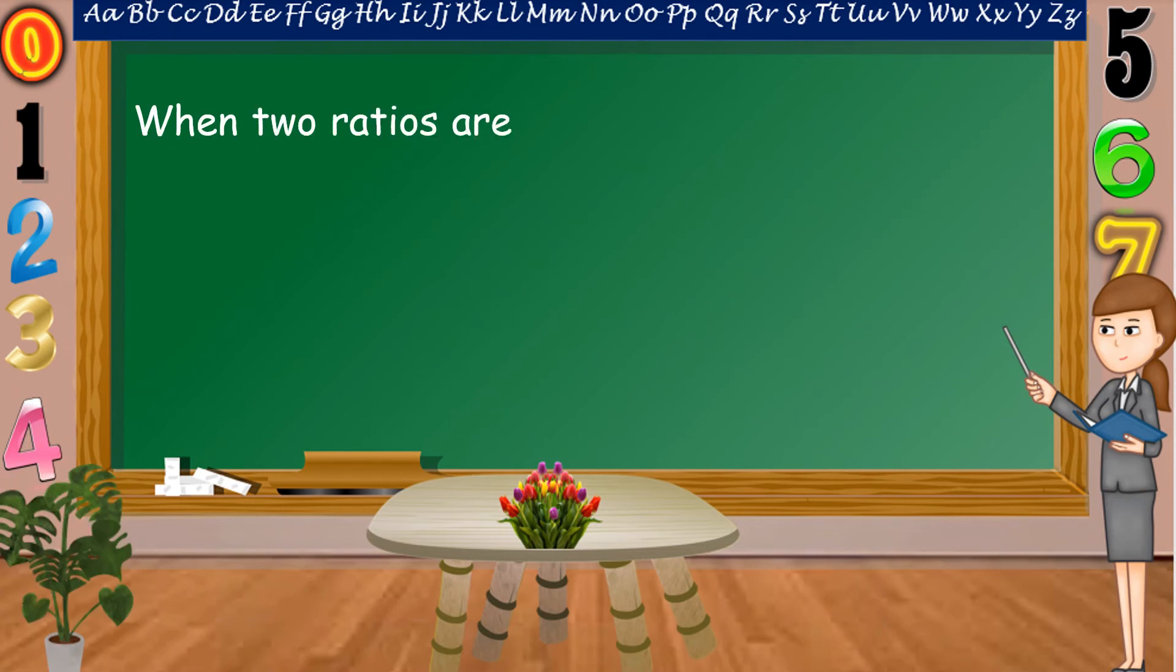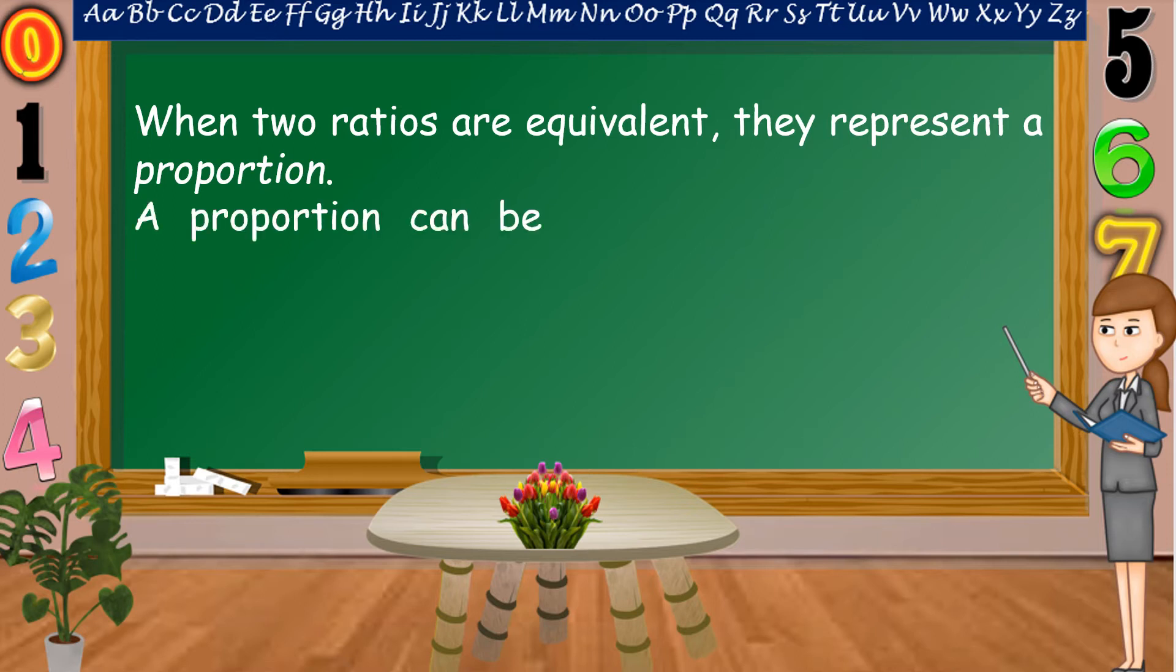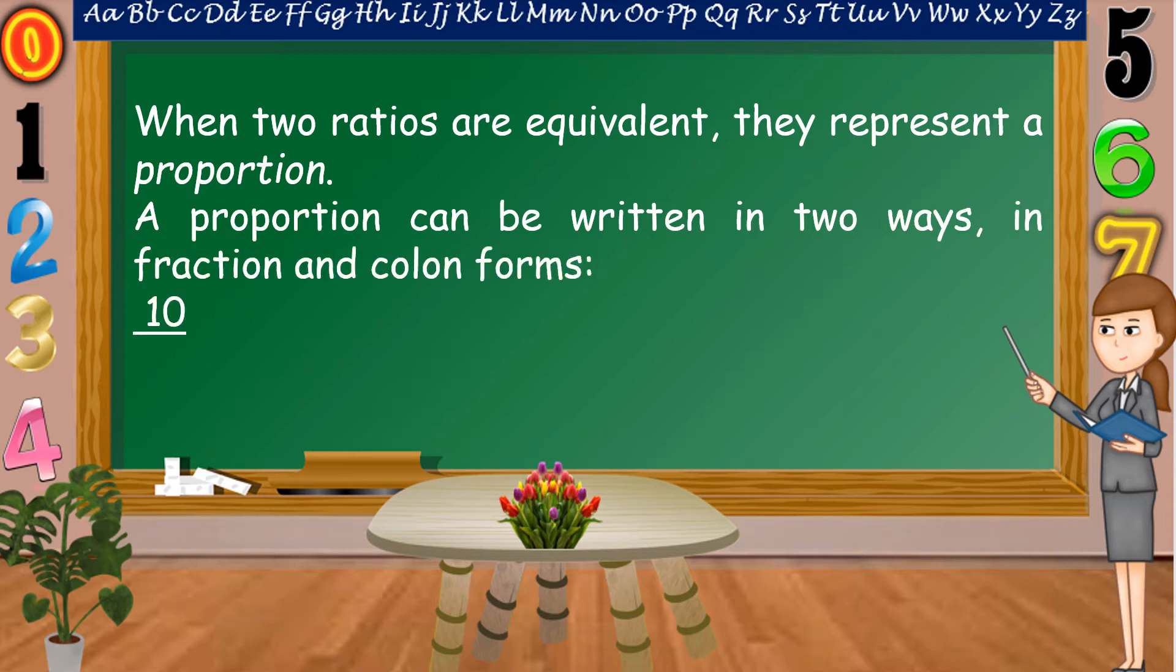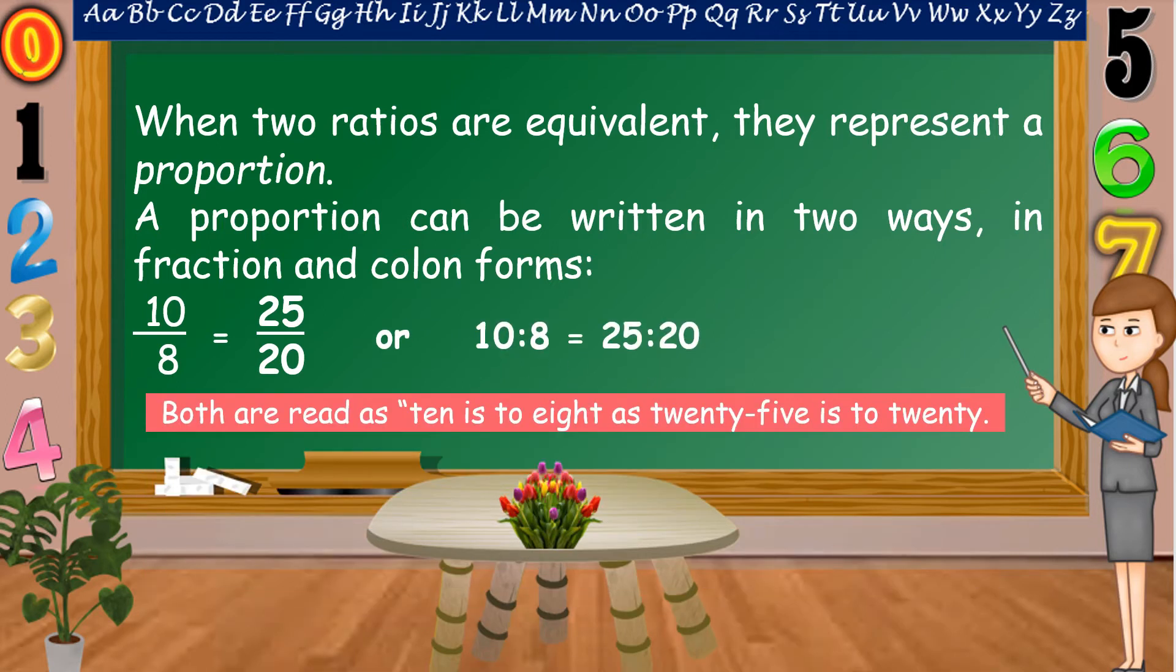When two ratios are equivalent, they represent a proportion. A proportion can be written in two ways, in fraction and colon forms. Both are read as 10 is to 8, as 25 is to 20.